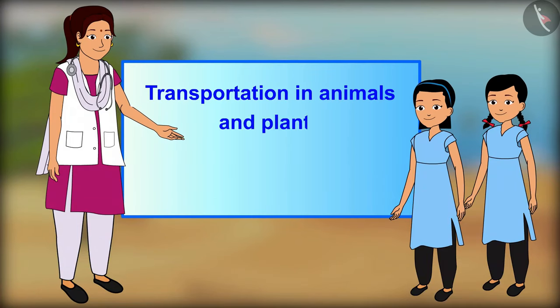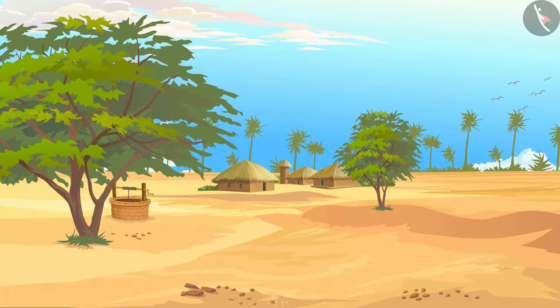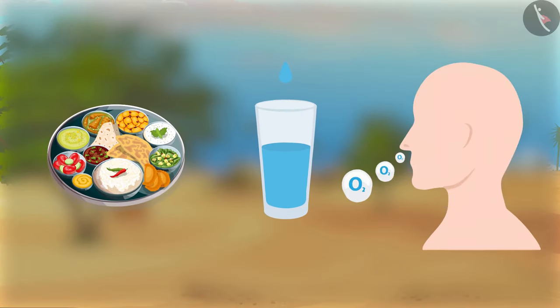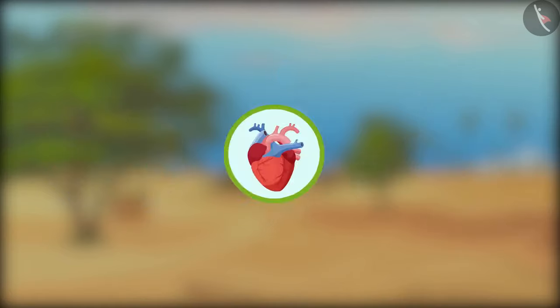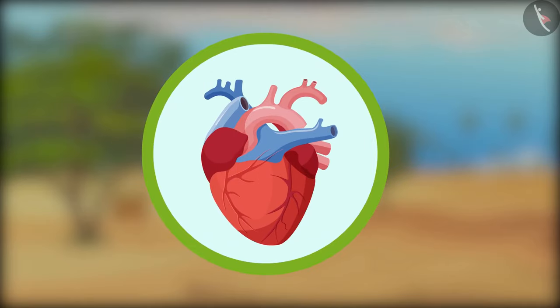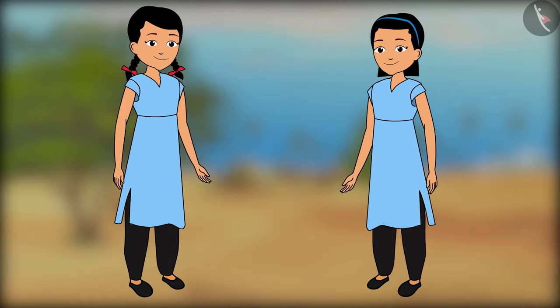Transportation in animals and plants - part 1: circulatory system. Hello friends, do you know that we need food, water, and oxygen to sustain life? How does the food, water, and oxygen reach the different parts of our body? Have you ever tried to hear your heartbeat? Keep your hand on your chest and try to hear it. Have you ever seen the blood vessels on your hands? Come, let us go with Sarita and Rama to their school, where a doctor has come to conduct a checkup.